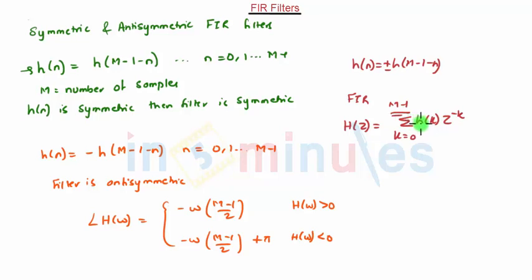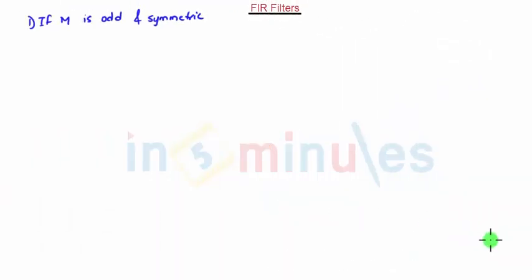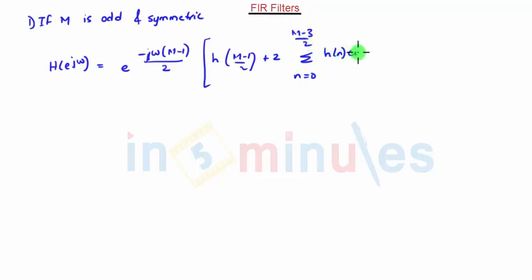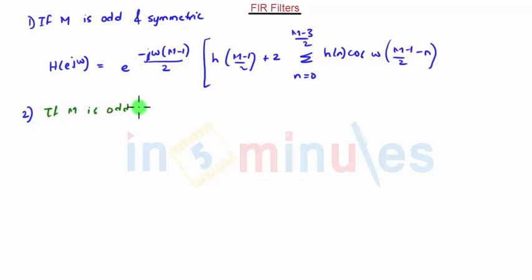The frequency response for different conditions is as follows. The first condition: if M is odd and symmetric, then H(e^jω) = e^(-jω(M-1)/2) × [h((M-1)/2) + 2·Σ(n=0 to (M-3)/2) h(n)·cos(ω((M-1)/2 - n))]. The second condition: if M is odd and anti-symmetric, then H(e^jω) uses a similar form.